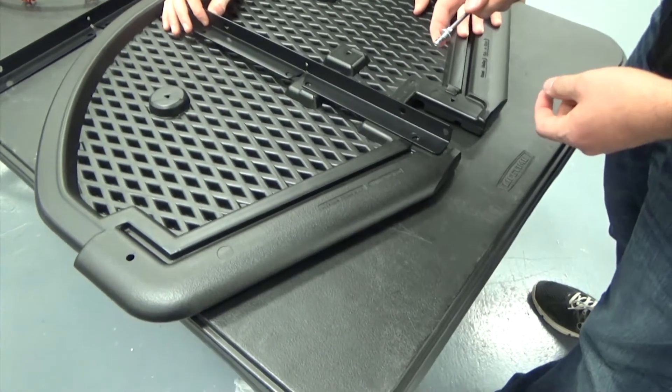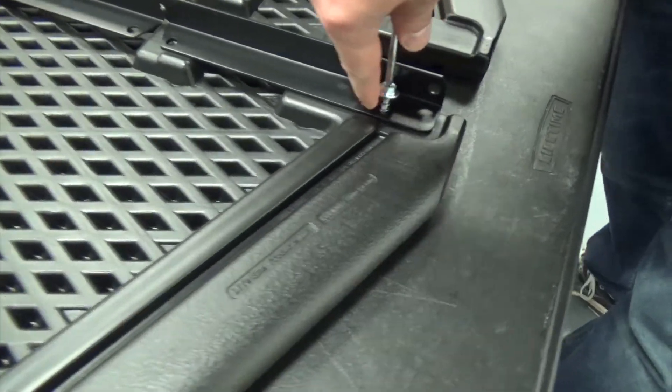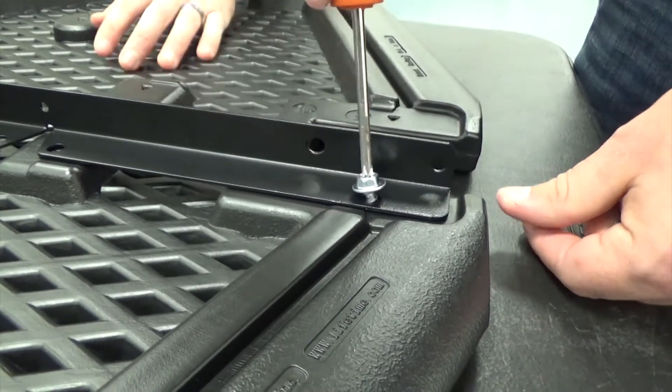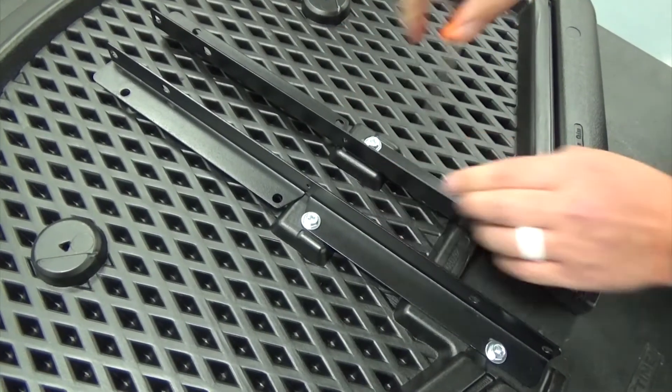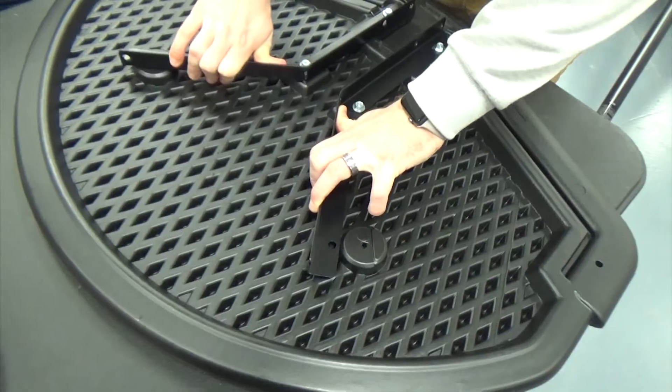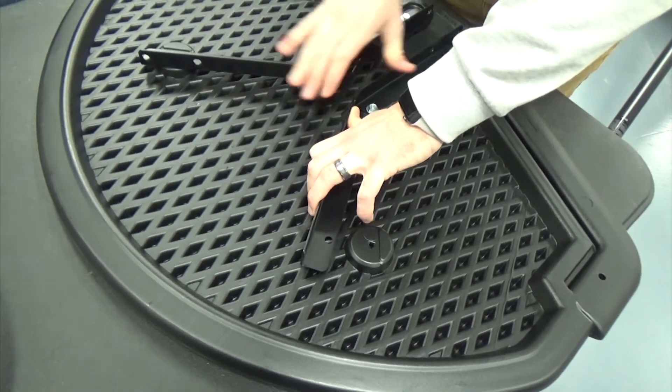Line up the holes in the backboard brackets with the screw bosses in the backboard. Then secure the brackets to the backboard. Bend the backboard brackets by hand, then secure them to the backboard.